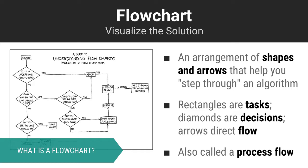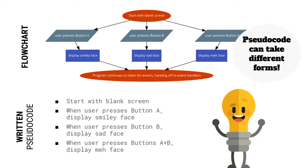Pseudocode can either be a short English-like description of the solution we are building, or we can accomplish the same thing using what's called a flowchart or process flow. In a flowchart, special symbols are used to represent tasks and decisions made in the program. Here's an example of a simple program represented both visually and in informally written pseudocode. Each describes a solution, just in its own way.